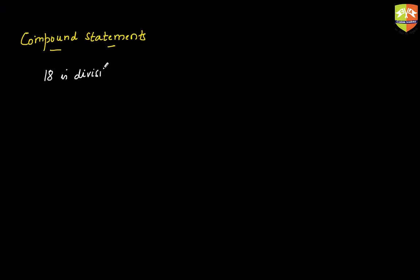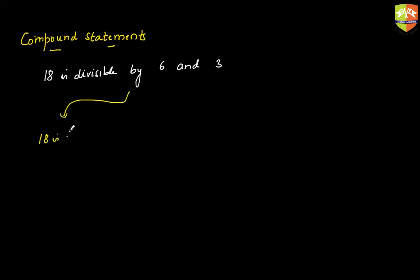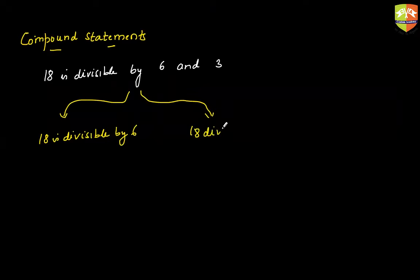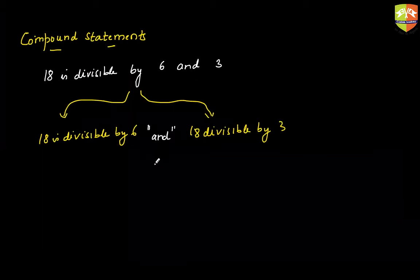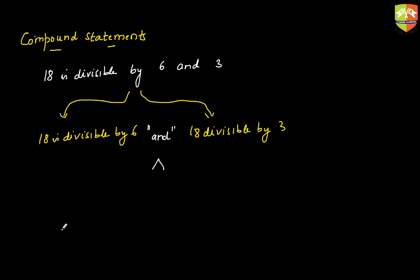Let me give a simple example. Consider '18 is divisible by 6 and 18 is divisible by 3.' This statement is made up of two component statements connected by the word 'and.' This connector is represented by a symbol in logic.